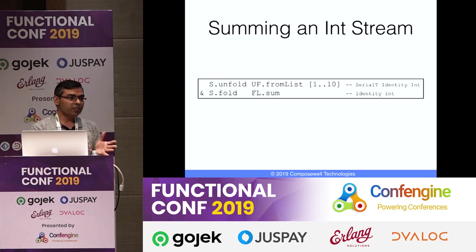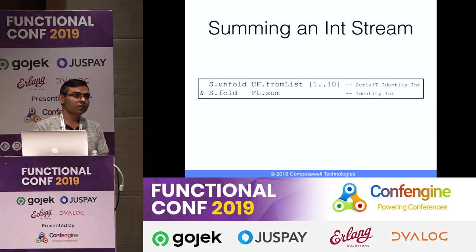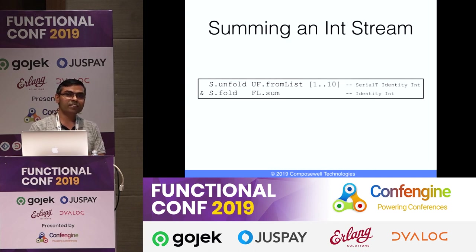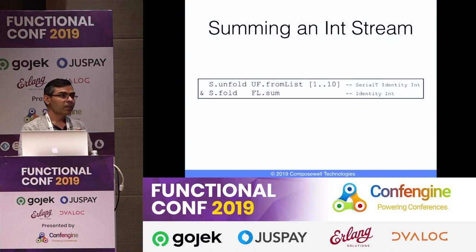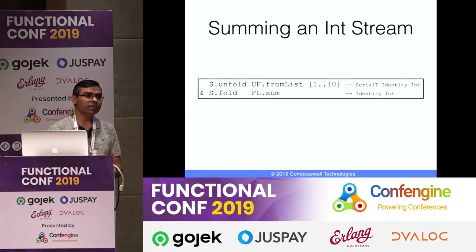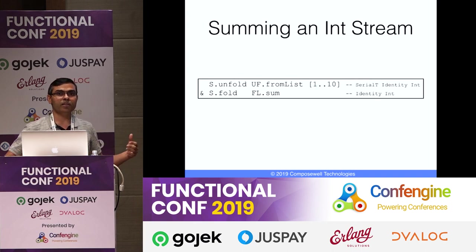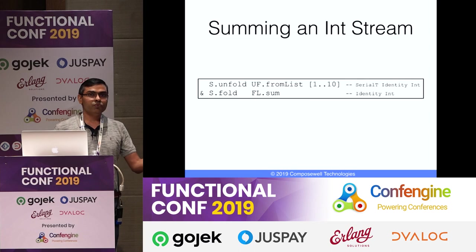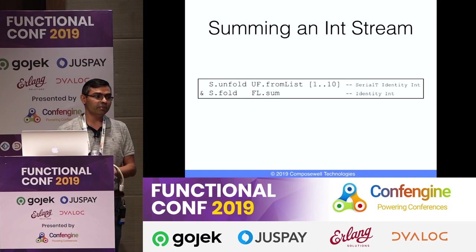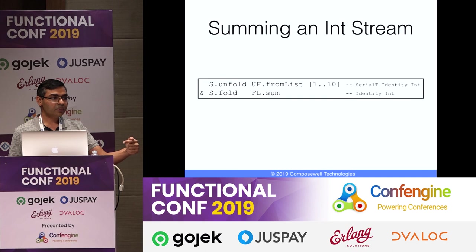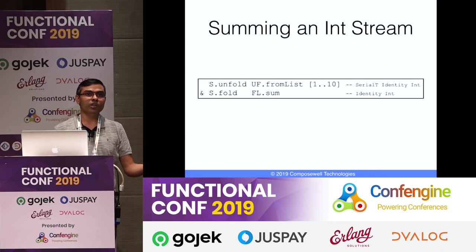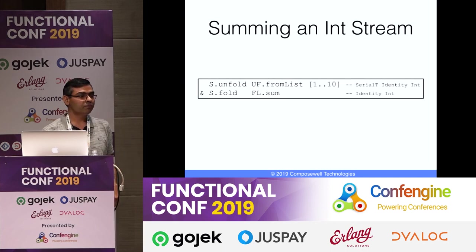The simplest example: UF.fromList is an unfold in the unfold module — it generates a stream from a seed list of 1 to 10. We immediately call fold on that using the sum fold, which sums all elements in the stream. The output is a Serial T Identity Int, and when folded you get the sum in the identity monad.